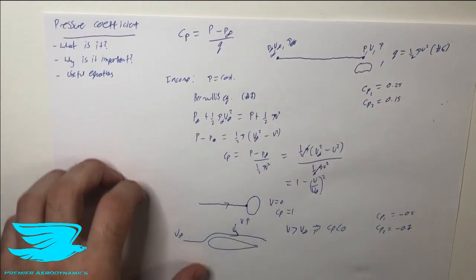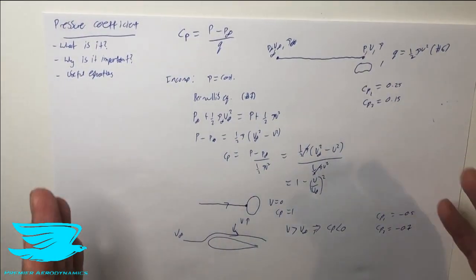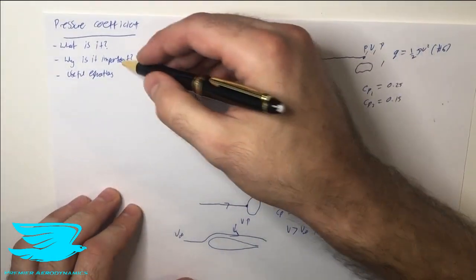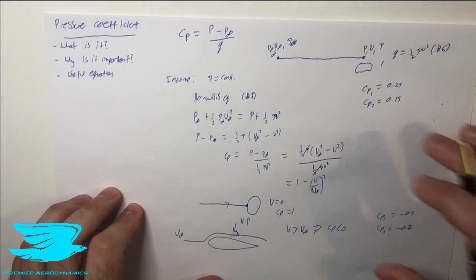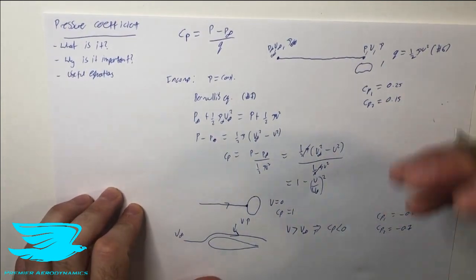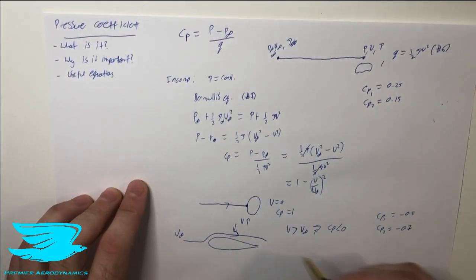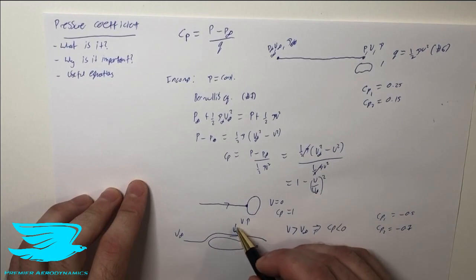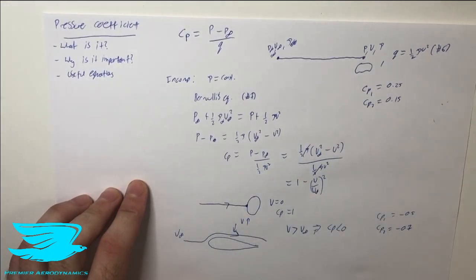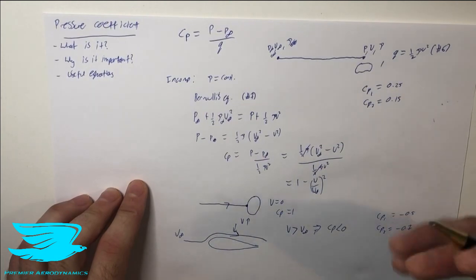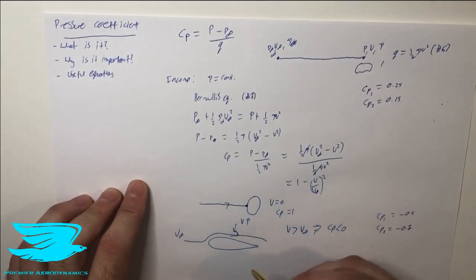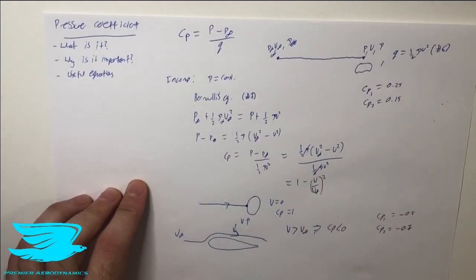So this is one major application of the pressure coefficient and why it is important. We use this when comparing airfoils — the lower (more negative) the pressure coefficient on top, the more lift the airfoil is producing, assuming that the CP underneath stays constant.